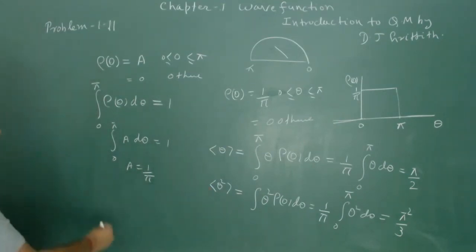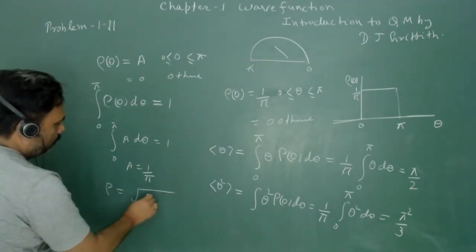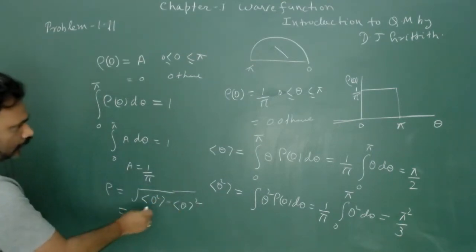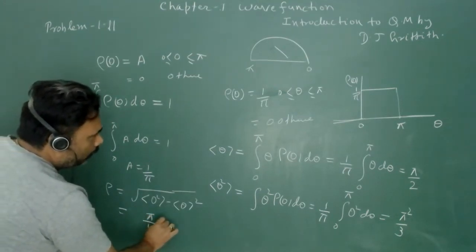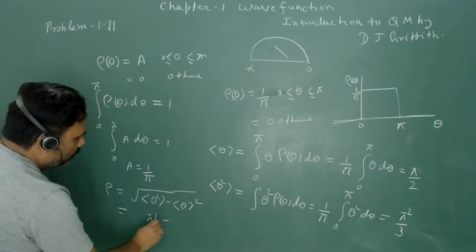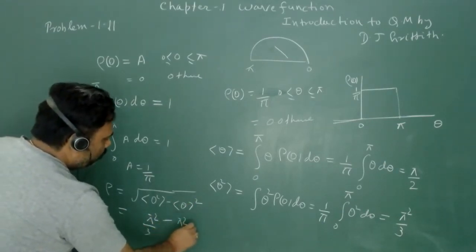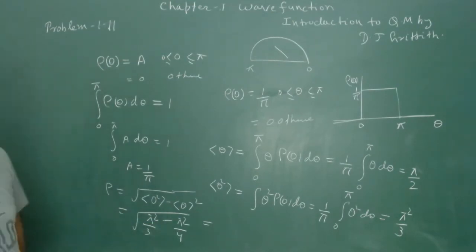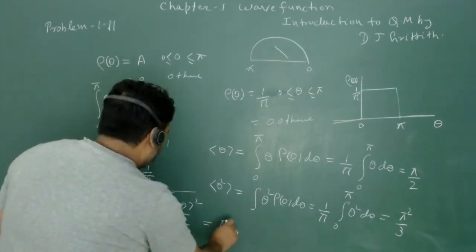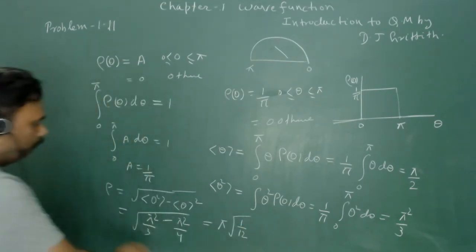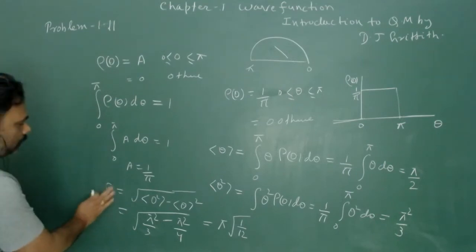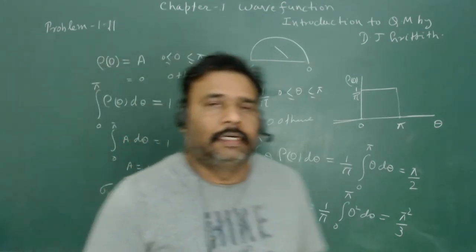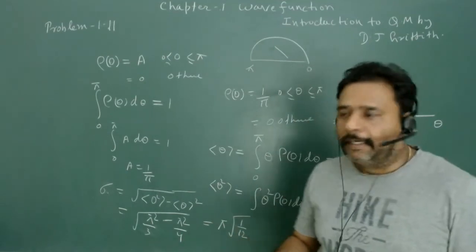Now we calculate sigma: σ = √(⟨θ²⟩ − ⟨θ⟩²) = √(π²/3 − π²/4). We can take π outside and inside we have 1/12, so σ = π√(1/12). This is our standard deviation.